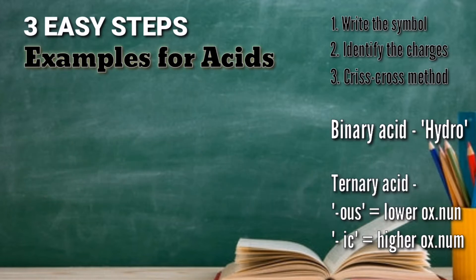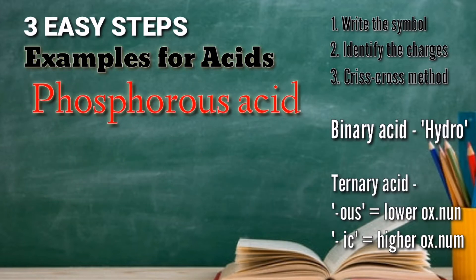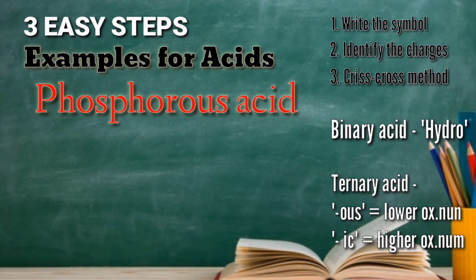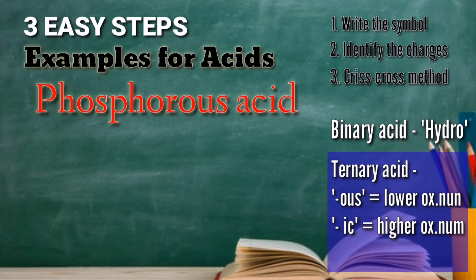Let's proceed with our next example: phosphorous acid. This is still a ternary acid because there is no 'hydro' in the compound. Instead, we have the suffix OUS, which is why it becomes phosphorous acid.